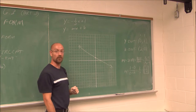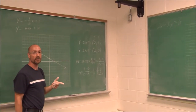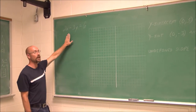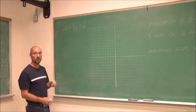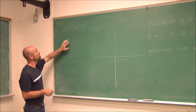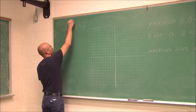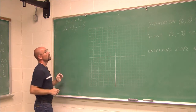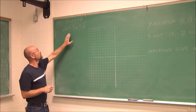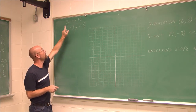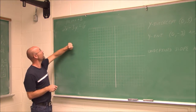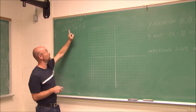We can see the behavior of the graph without even graphing it. Now let's look at another example: 2x minus 3y equals 6. This is in standard form, but we want it in slope-intercept form so we can see the behavior of the line before graphing it. Slope-intercept form, y equals mx plus b, is essentially just solving the equation for y. To do that, I need to get the x term to the other side.